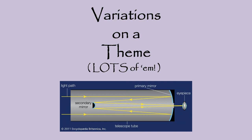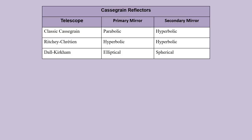The classical Cassegrain configuration, with its focal length-boosting convex secondary that shoots light out through a hole in the primary, has had about 350 years to evolve. Two of many other combinations of primary and secondary mirrors are the Ritchey-Chrétien and the Dall-Kirkham. These other designs came about as a means of correcting for various optical aberrations that show up in photographs, or for decreasing the cost of making the telescope. While experimenting with different combinations of curved mirrors led to important design developments, an equally important modification came about in the form of adding a third flat mirror.